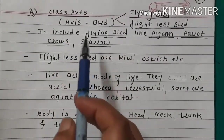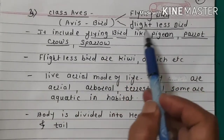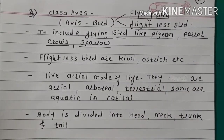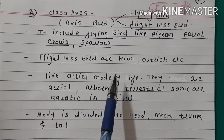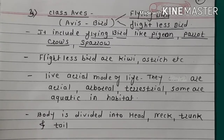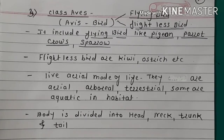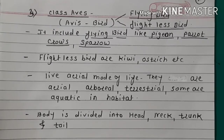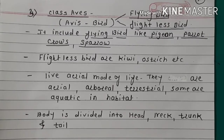Class Aves — Avis means birds. Birds are divided into flying birds and flightless birds. Flying birds include pigeon, parrot, crow, sparrow, etc. Flightless birds include kiwi, ostrich, etc. They live an aerial mode of life. They are aerial, arboreal — that means living on trees — terrestrial, and some are aquatic in habitat.